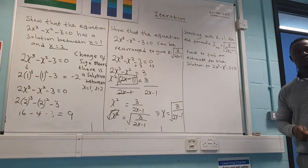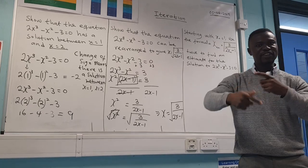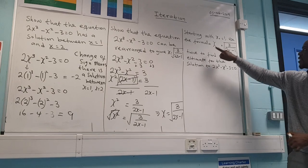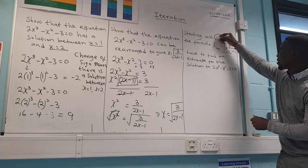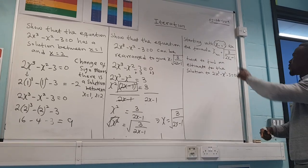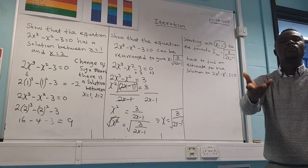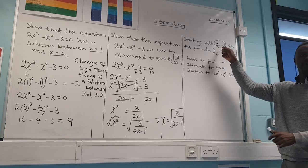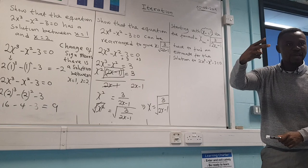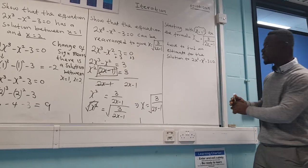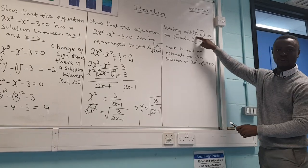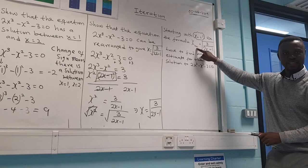Now part C — this is exactly what I meant by the definition at the beginning: iteration means the repetition of a mathematical process using the previous answer. The question gives you a starting value: x₀ = 1. If the question doesn't give you one you may choose your own, but at GCSE level they will usually give it to you. Here it says to apply the formula twice.